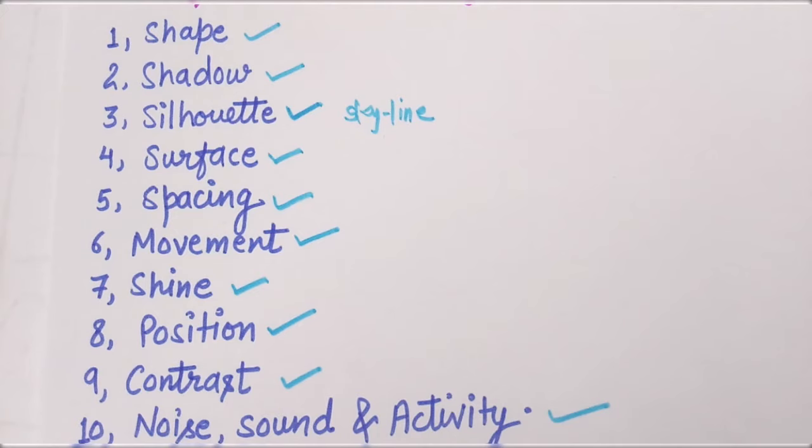Now, you have to write this as a long story. I've said it about eight to four times. We have to remember: shape, shadow, silhouette, surface, spacing, movement, shine, position, contrast, noise sound activity. Repeat it four times: shape, shadow, silhouette, surface, spacing, movement, shine, position, contrast, noise, sound, activity.